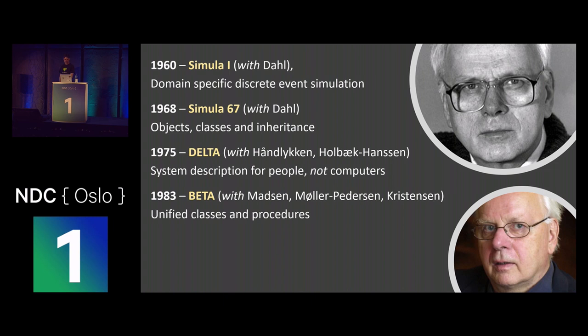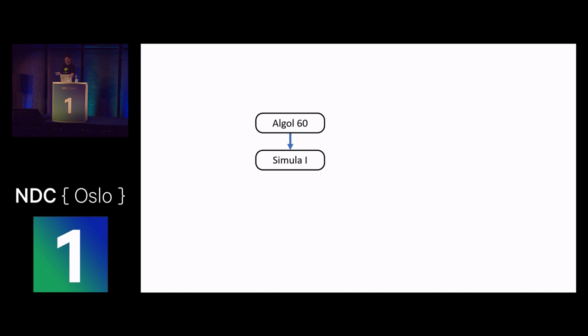Here's a quick genealogy of programming languages. Algol was like Java in the late 90s — it drove all the thinking, except it was better. It was a beautiful language that really introduced the ideas of high-level programming languages, structured programming, and strong typing. Simula 1 was a superset of that — they added features to Algol rather than create their own language from scratch.